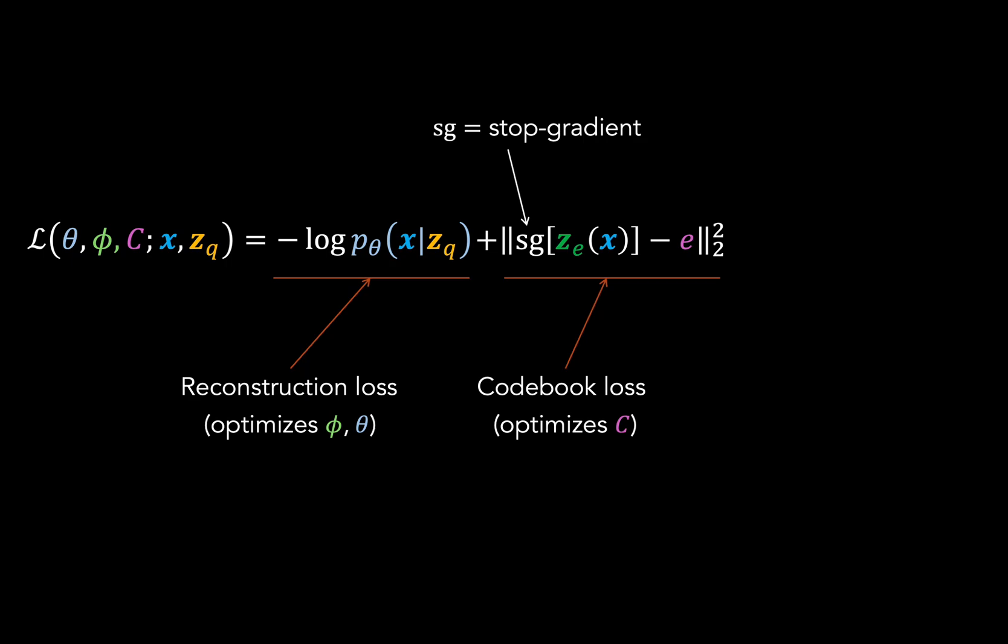Now you might be wondering, what about those codewords that never get chosen in the batch and therefore don't show up in the loss? Well, the quick answer is nothing happens to them and they don't get updated at all. So this is a sparse loss in the sense that it targets only a subset of codeword vectors, which are those that are chosen during quantization.